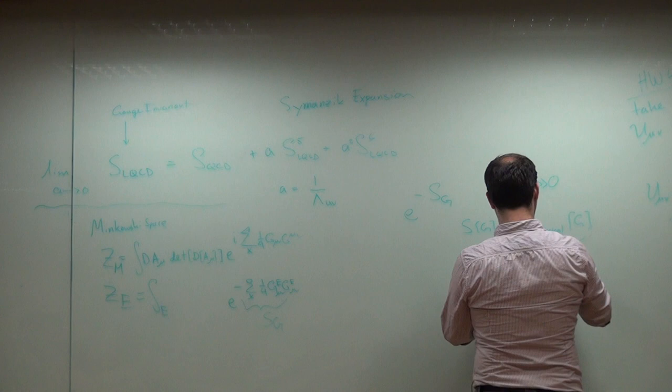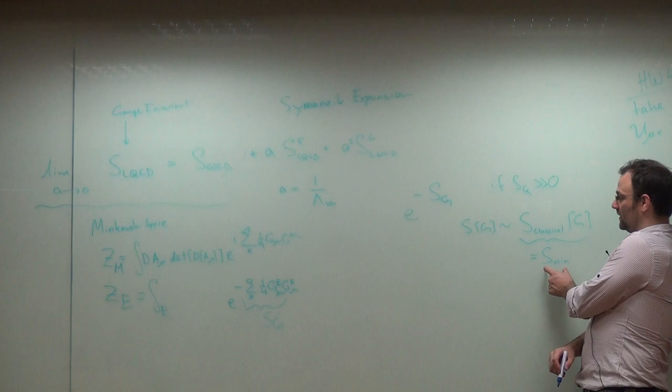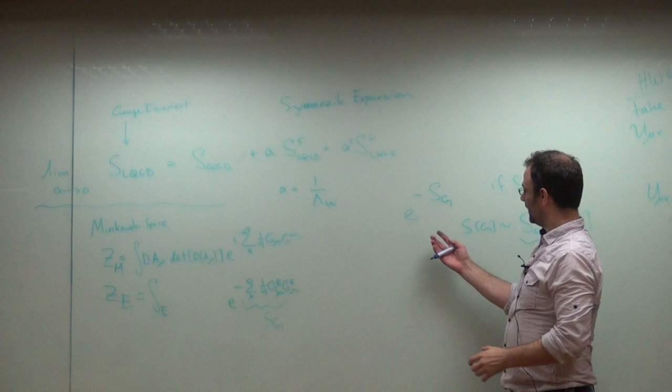But if your set of S, G are all approximately equal to the classical action, this, by definition, is equal to the minimum, right? This is the absolute smallest value of S you can have. And so if you find a set of G's that are close to this classical one, those would be the most important, to give the largest contribution to this integral.